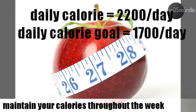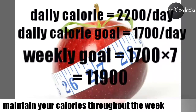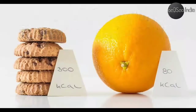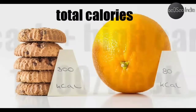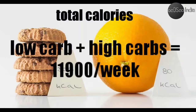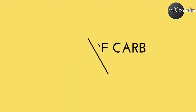For example, if your daily maintenance is 2,200 calories and your fat loss goal is 1,700 calories per day, your weekly total is 11,900 calories. In carb cycling, your weekly calorie intake also stays at 11,900 calories — it doesn't increase. You simply redistribute calories across high carb and low carb days while keeping the weekly total consistent.